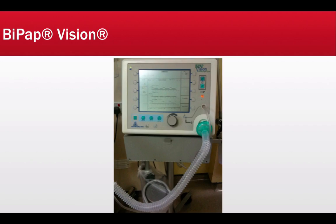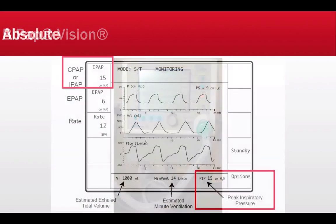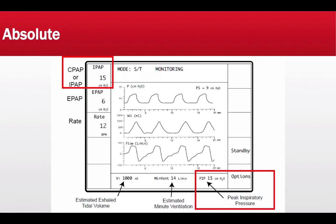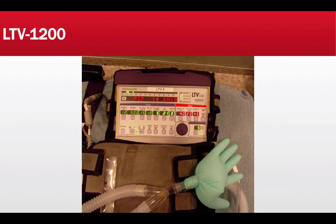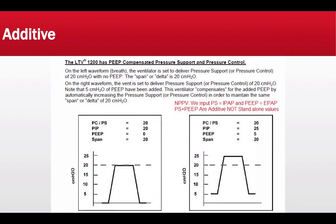Here is a BiPAP Vision machine by Respironics. Whenever you arrive at a facility, this is the interface you will see. At the top left-hand corner, IPAP is set at 15 and EPAP is set at 6. At the bottom, peak inspiratory pressure reads 15 centimeters of water pressure. Peak inspiratory pressure is the pressure in the circuit to the proximal airway at end inspiration, and it's absolute — IPAP and EPAP are not additive. The LTV-1200, on the other hand, has pressure support in addition to PEEP, as clearly demonstrated in its user manual.